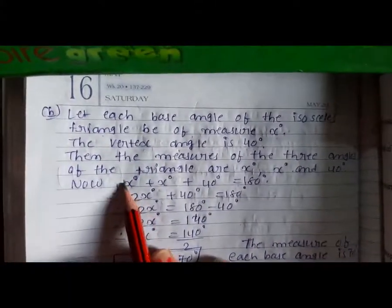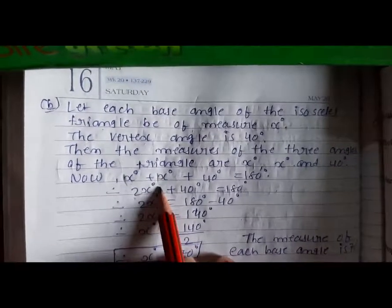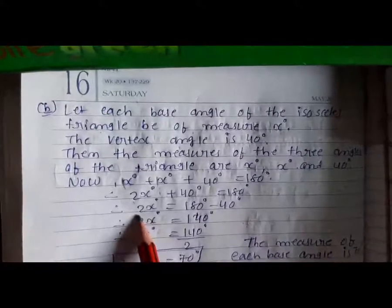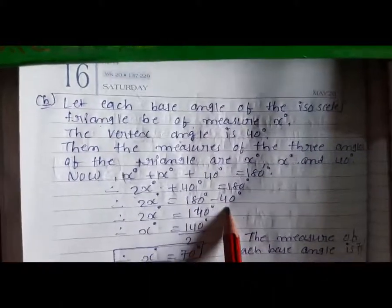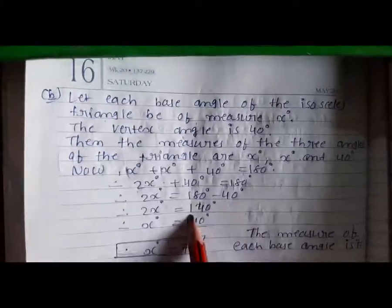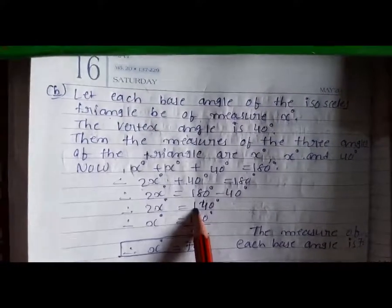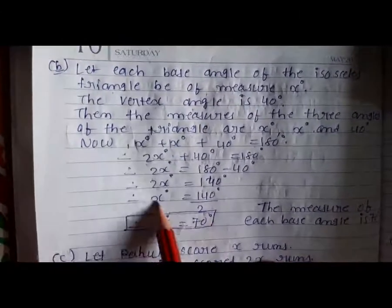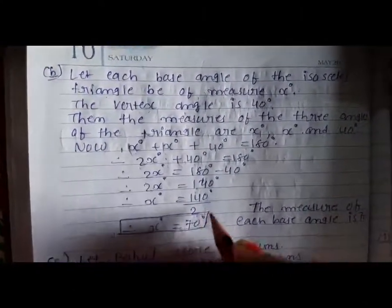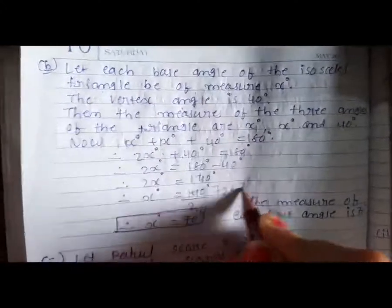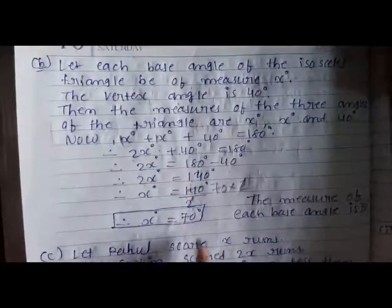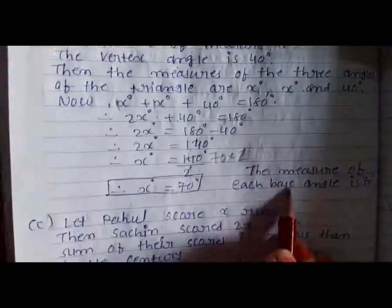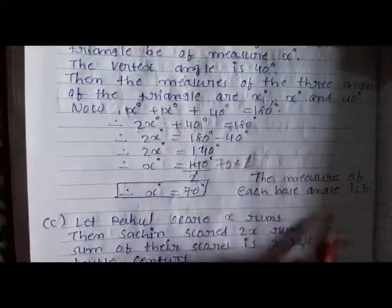That gives us 2X plus 40 equals 180. Transposing 40 to the other side: 2X equals 180 minus 40, which is 140. Since 2 is multiplying, it divides on the other side: X equals 140 divided by 2, which is 70. So, the measure of each base angle is 70°.